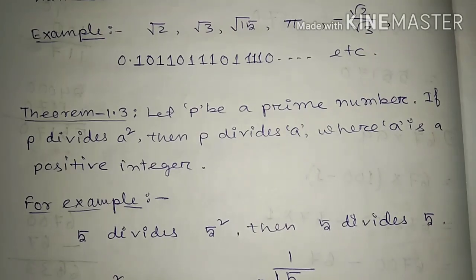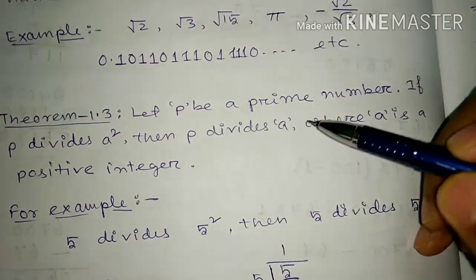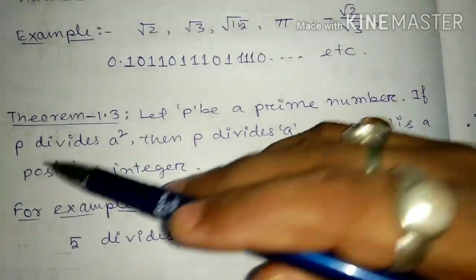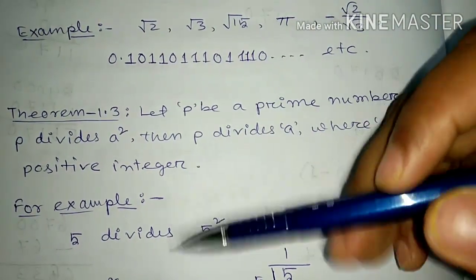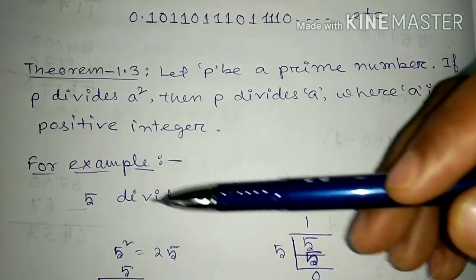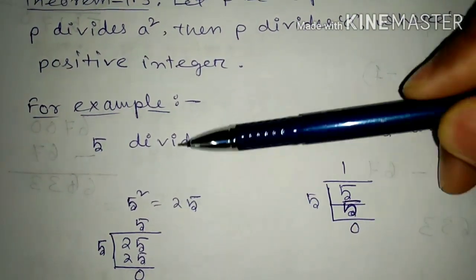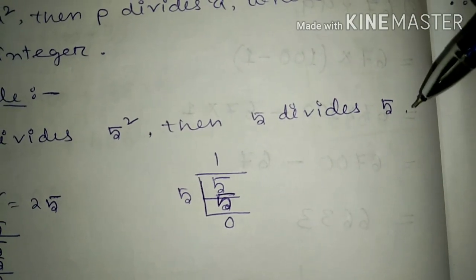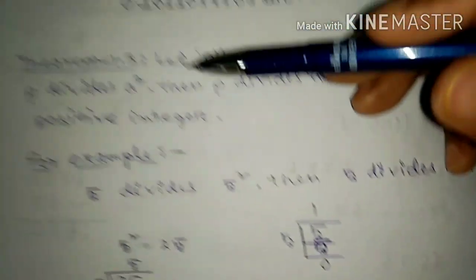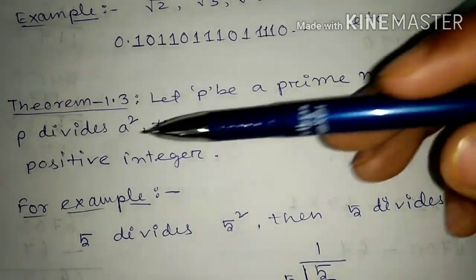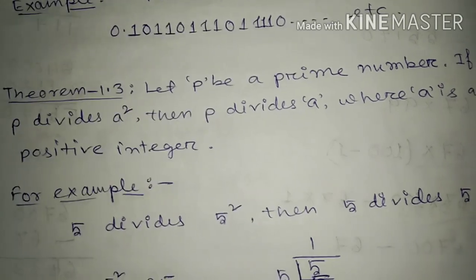Now, one theorem you have to remember — the proof is not needed in your class. Let P be a prime number. If P divides A squared, then P divides A, where A is a positive integer. For example, take 5: 5 divides 5 squared, which is 25. 25 is divisible by 5, and 5 is also divisible by 5. So according to this theorem, if P is prime and P divides A squared, then P divides A.